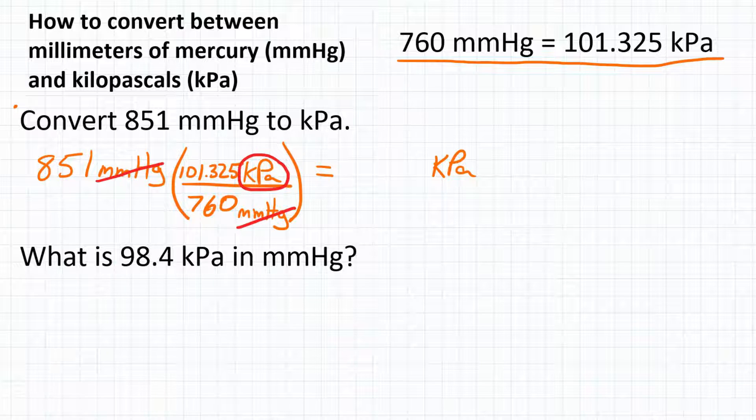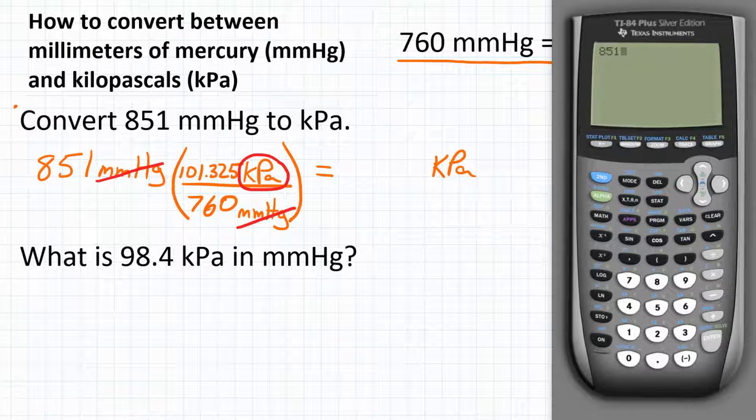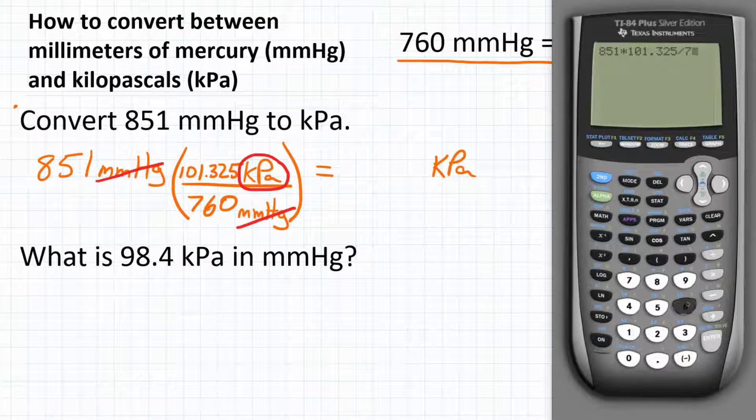Now we can plug this in our calculator. We will start with 851, and we're going to multiply by our conversion factor. Since it's a fraction, we'll multiply by the top and divide by the bottom. So we will first multiply by 101.325, and then divide by 760.